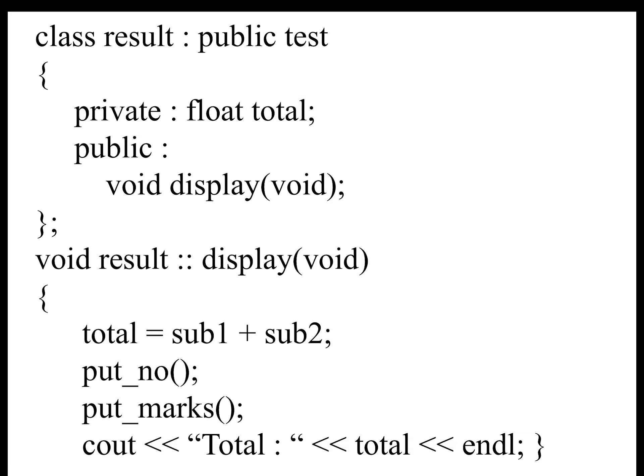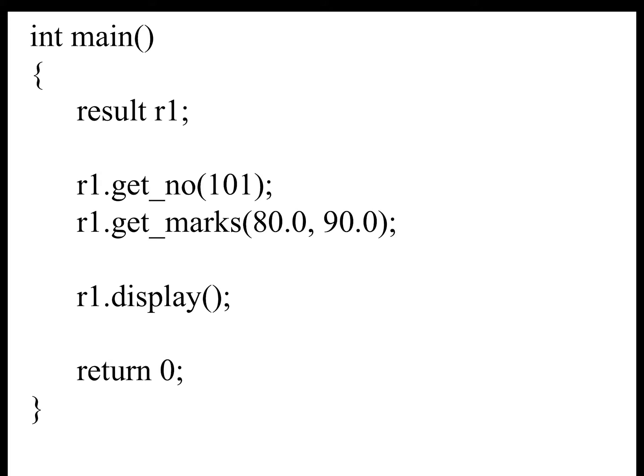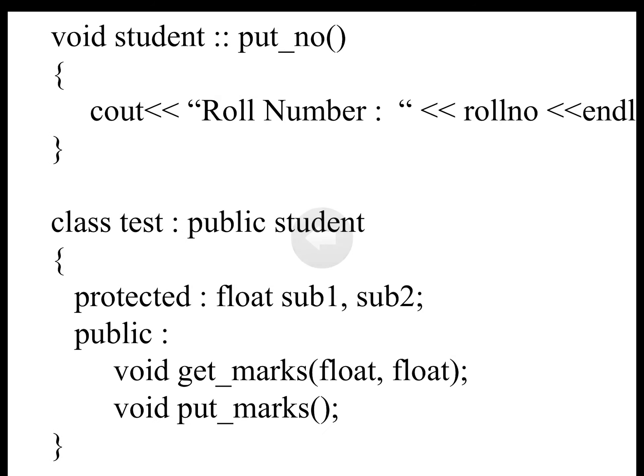Class Result is a derived class with Public Test as its base class. It has a private member float total and a public member function display. In the display function, we add the marks of two subjects to get the total, then output the roll number, marks, and total. In the main function, we create object R1 of type Result, call R1.getNumber with 101, pass marks 80 and 90, and finally call R1.display. This is the complete example of Hybrid Inheritance.